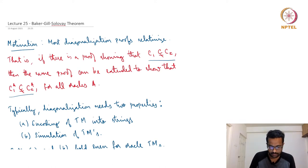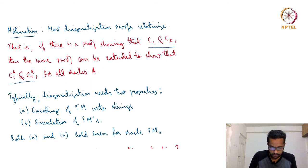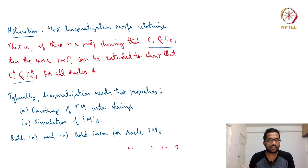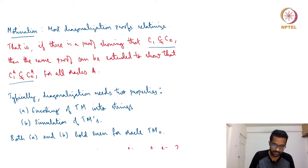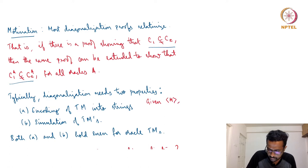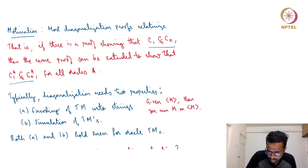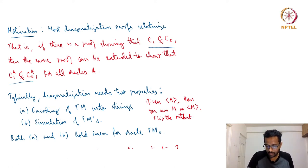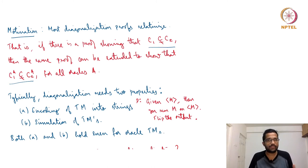Diagonalization proofs basically rely on two things. First, we need to be able to encode the Turing machine into some strings. We say things like: given the description of a Turing machine M, run M on its own description and then flip the output. This description becomes part of another Turing machine D, and you ask what happens when D is fed its own description, arriving at a contradiction. This is how diagonalization proofs work — the halting problem, space hierarchy, everything.